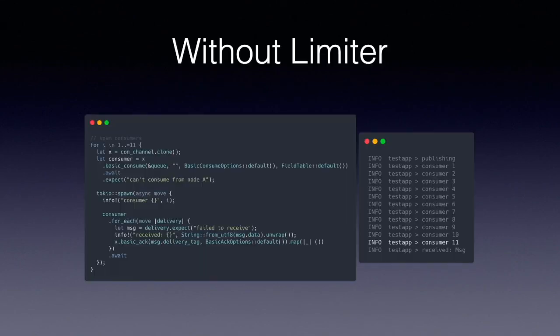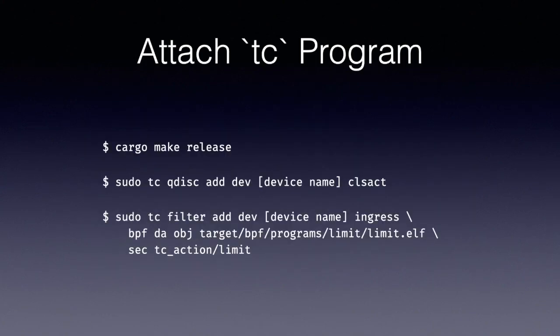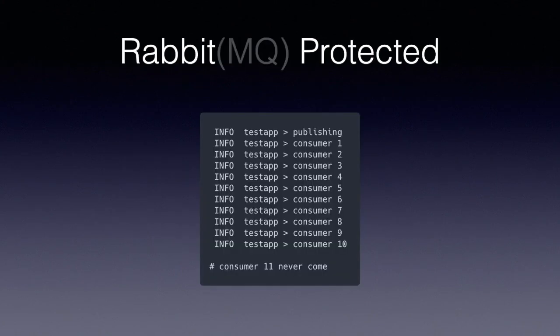Let's see whether it works. Here on the left, you can see a test application that tries to declare 11 consumers. Before we attach our limiter program, you can see that the client is able to declare all the consumers. WriteBPF makes it very easy to compile BPF programs, but currently we still need a few workarounds which are handled by the cargo make command here. TC commands can look quite complex, but the documentation explains it very well. Now, trying the test application again, we can see it cannot declare the 11th consumer. We have indeed succeeded.